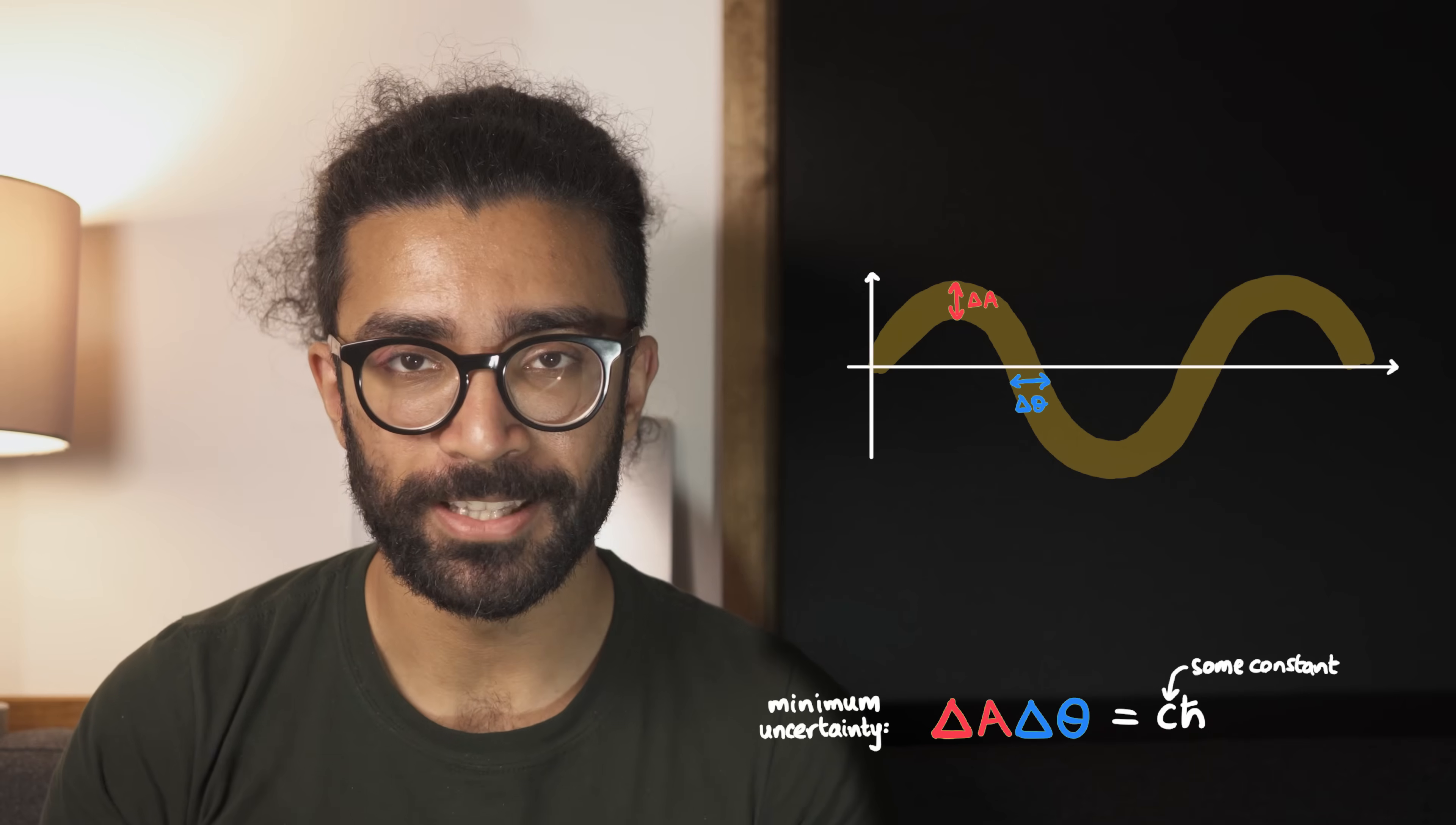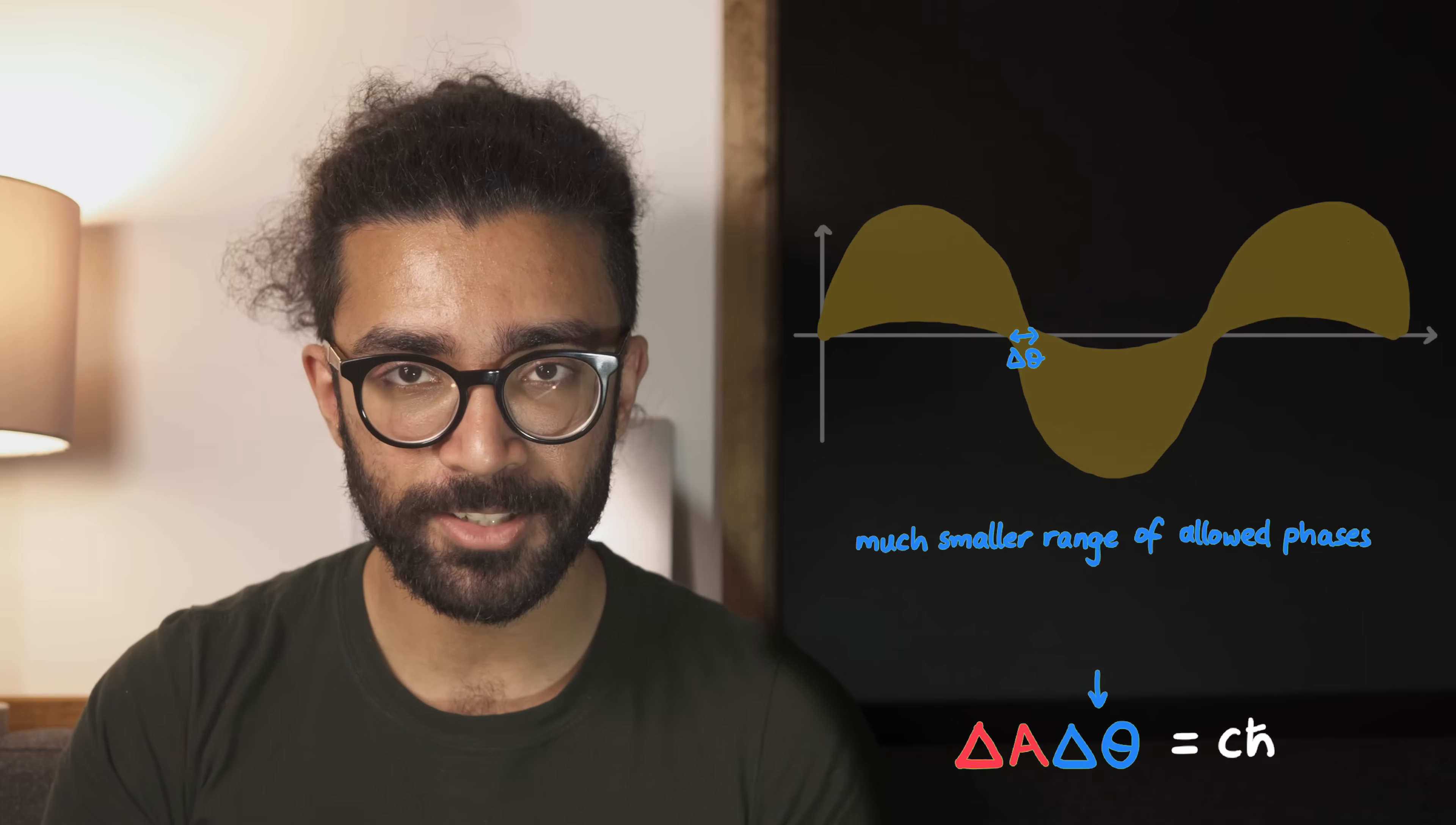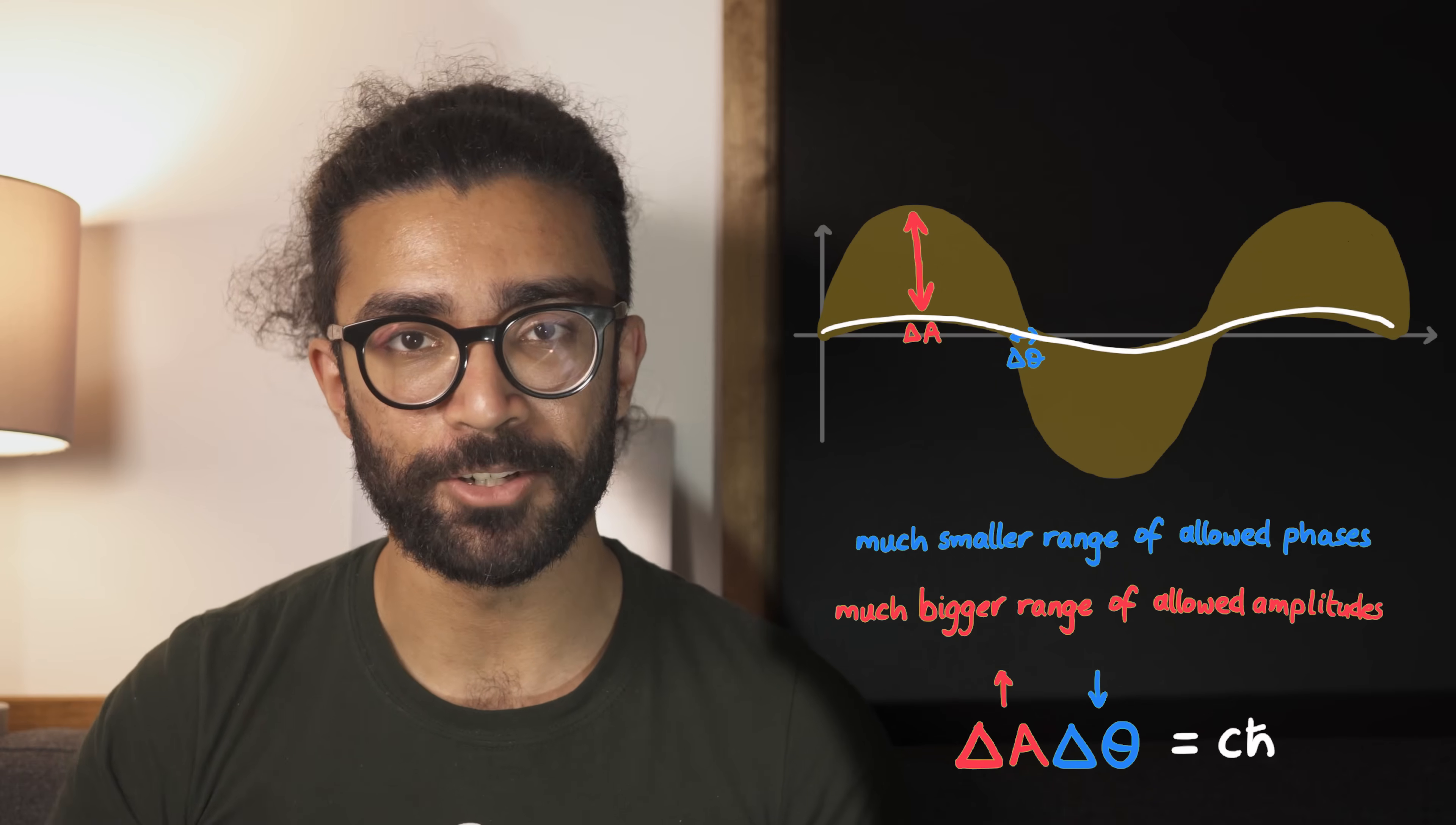We can actually lower the uncertainty in one of these quantities. For example, here's what a new wave diagram would look like. We can see that we're much more sure about what the phase of our wave is. It's now in a much smaller possible range. But in order to make up for this, and in order to ensure our wave still obeys the uncertainty relation, the uncertainty in the other quantity, amplitude, has increased. We are now much less sure about the amplitude of our wave, because it can be one of a much bigger range of amplitudes.